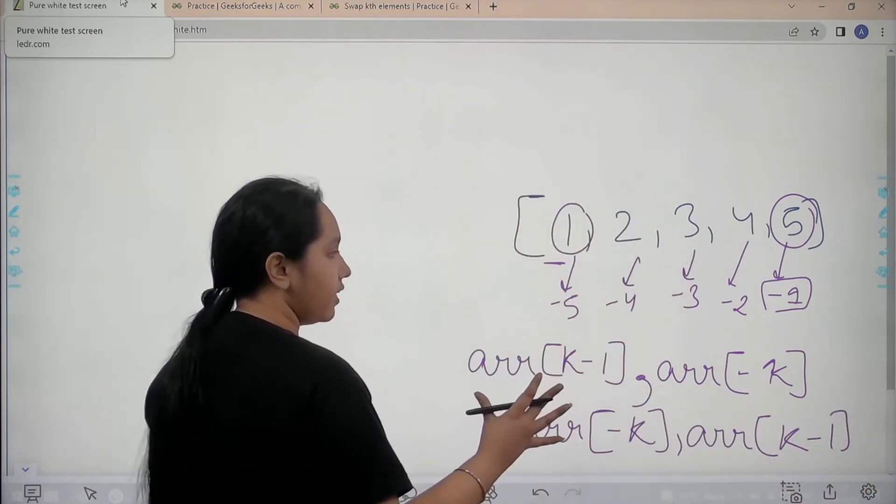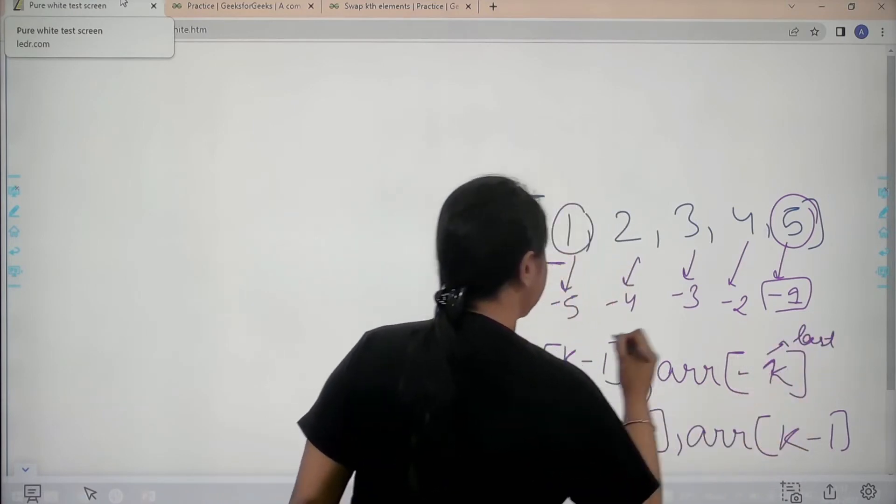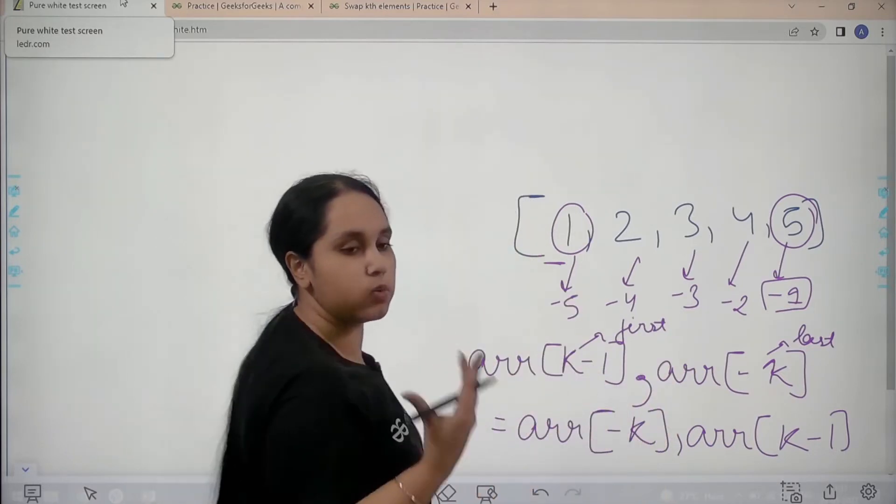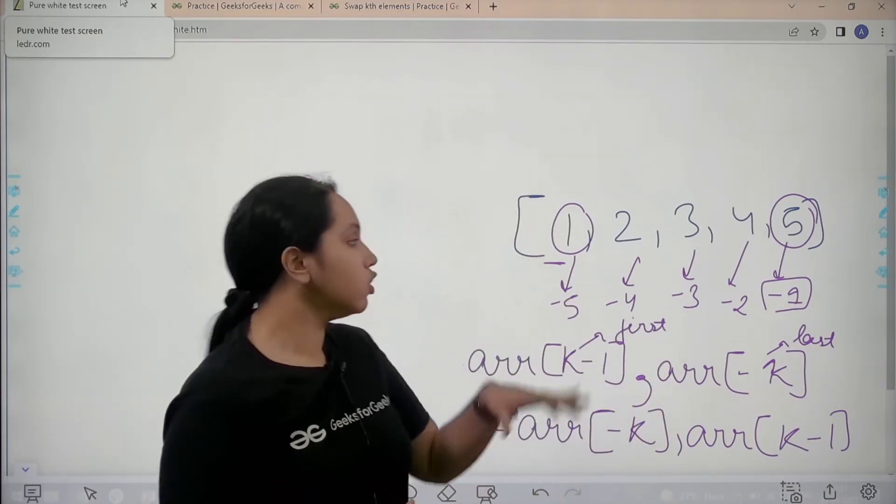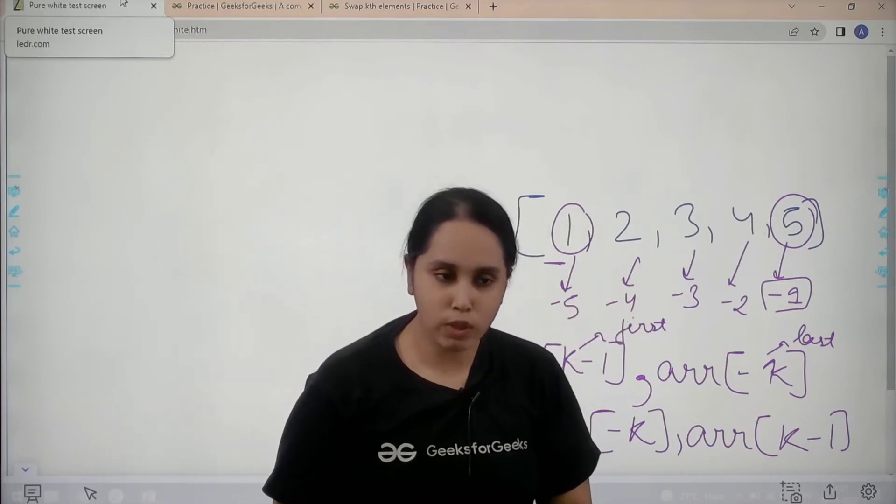So I just need to write like this. This would be the last element. This would be the first element. And we can directly swap them using this equal to method in Python. So I hope the concept is clear to you. So now let's move forward to the code part.